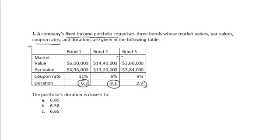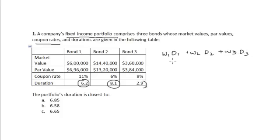We have to find the duration of the given portfolio. The duration of a portfolio is the weighted average of the durations of the bonds constituting it, equal to w1·d1 + w2·d2 + w3·d3, where w1, w2, w3 are weights based on the proportional market value of each bond.